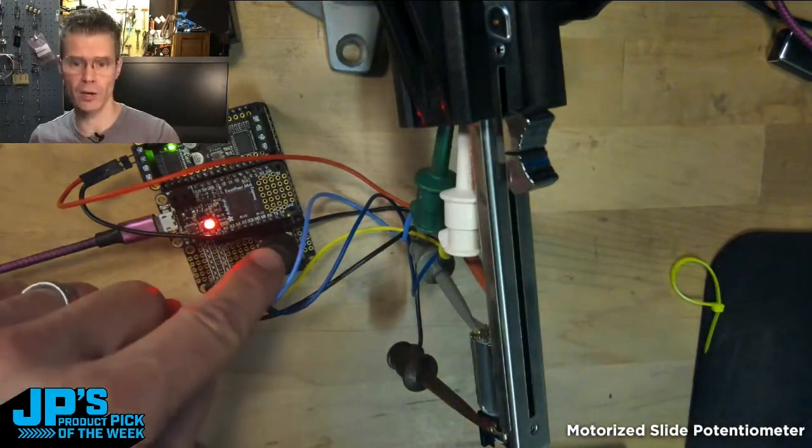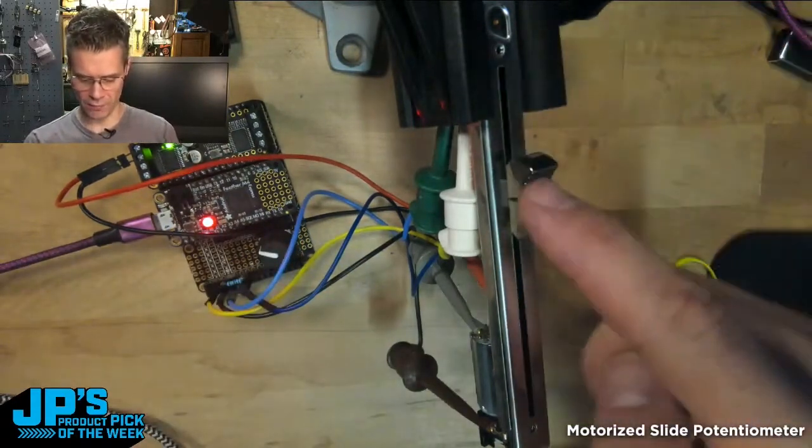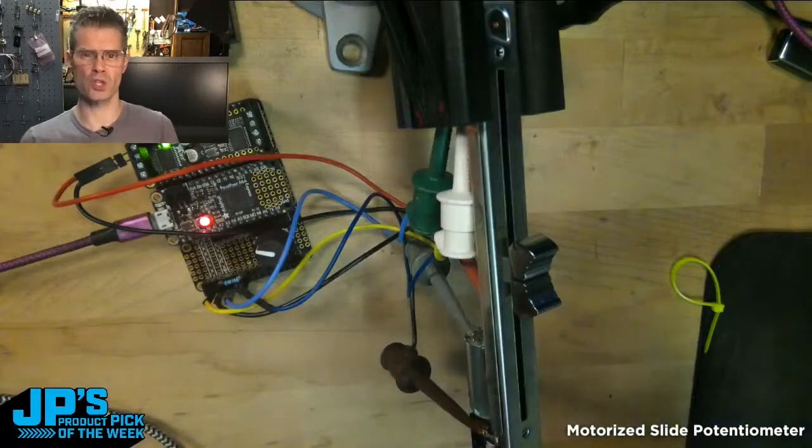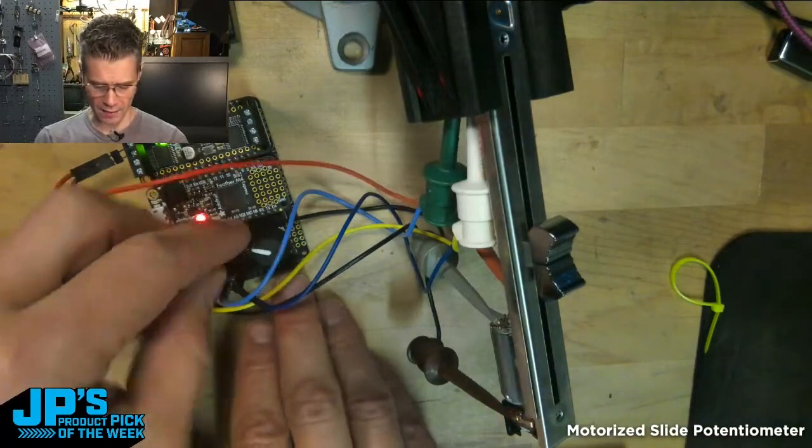So if I click my encoder, I can go to a different preset, hit another one. And these are just four positions that I've pre-programmed.